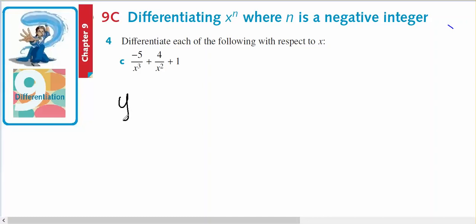So I could rewrite this as y equals negative 5x to the minus 3 plus 4x to the minus 2 plus 1. So all I'm doing is I'm moving the x's from the denominator up to the numerator.